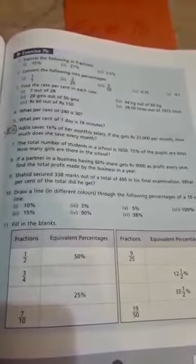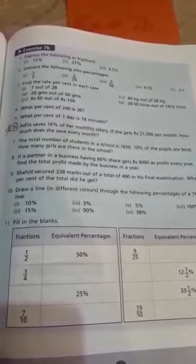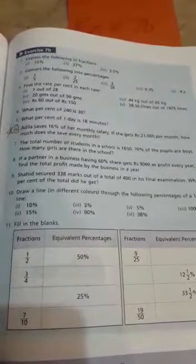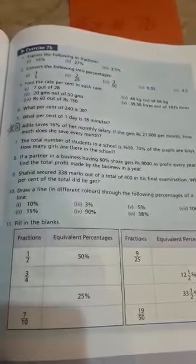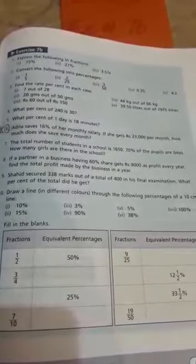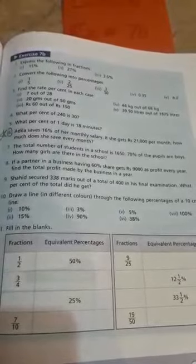Next, question number 6: Adila saves 16 percent of her monthly salary. If she gets Rs. 21,000 per month, how much does she save every month? Adila saves 16 percent of her salary. She earns 21,000. You have to find how much she saves every month in rupees, not in percentage.